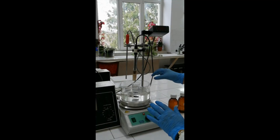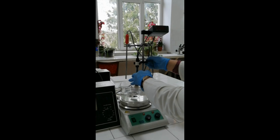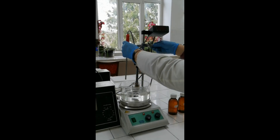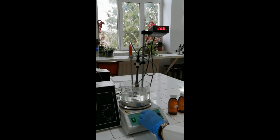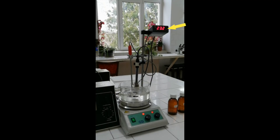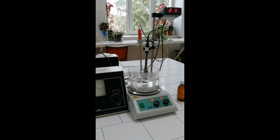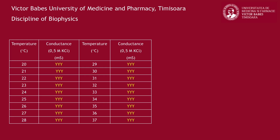Dip inside the study solution both the measuring electrode and the temperature sensor. Turn on the magnetic stirring. To start the heating, rotate the temperature control knob up to approximately 50 degrees Celsius mark. Read the solution temperature on the digital display of the thermometer. For each integer value of temperature, read the conductance value and record it in the table. After reaching 37 degrees Celsius, stop the heating and the magnetic stirring.